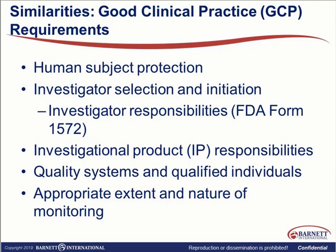Requirements for informed consent to protect research subjects, appropriate investigator selection, and investigator responsibilities as detailed in FDA Form 1572 still apply to oncology trials. Investigators are required to maintain control of investigational products, and sponsors have responsibilities for providing information about the use and storage of investigational products, just like in any other trials. Oncology trials must be managed and conducted by qualified individuals working within systems designed to ensure quality, including sponsors determining the appropriate extent and nature of monitoring.